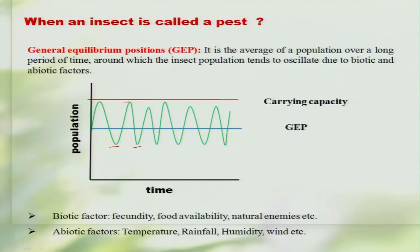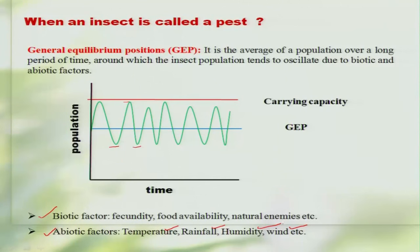The fluctuation is mainly dependent on abiotic factors as well as biotic factors. Abiotic factors like temperature, rainfall, relative humidity, and wind will sometimes favor the population to increase their numbers, or sometimes they will be detrimental so that the population crashes down.